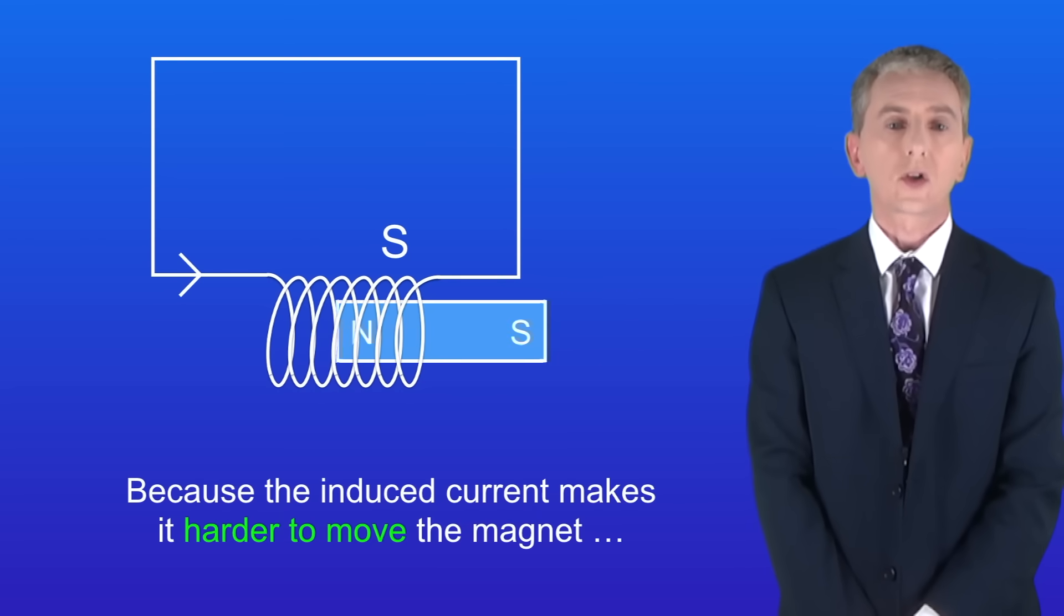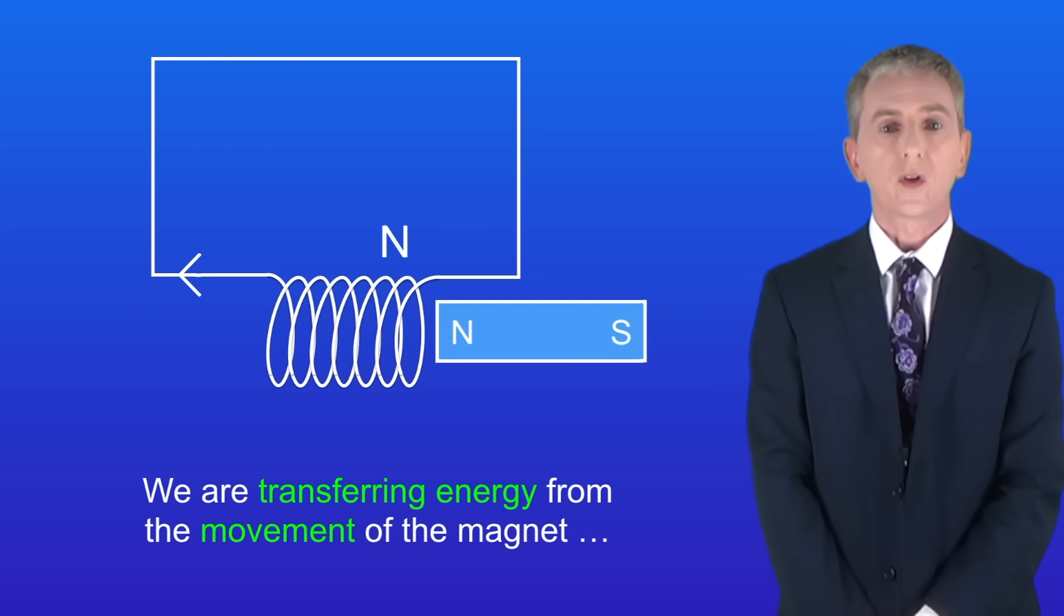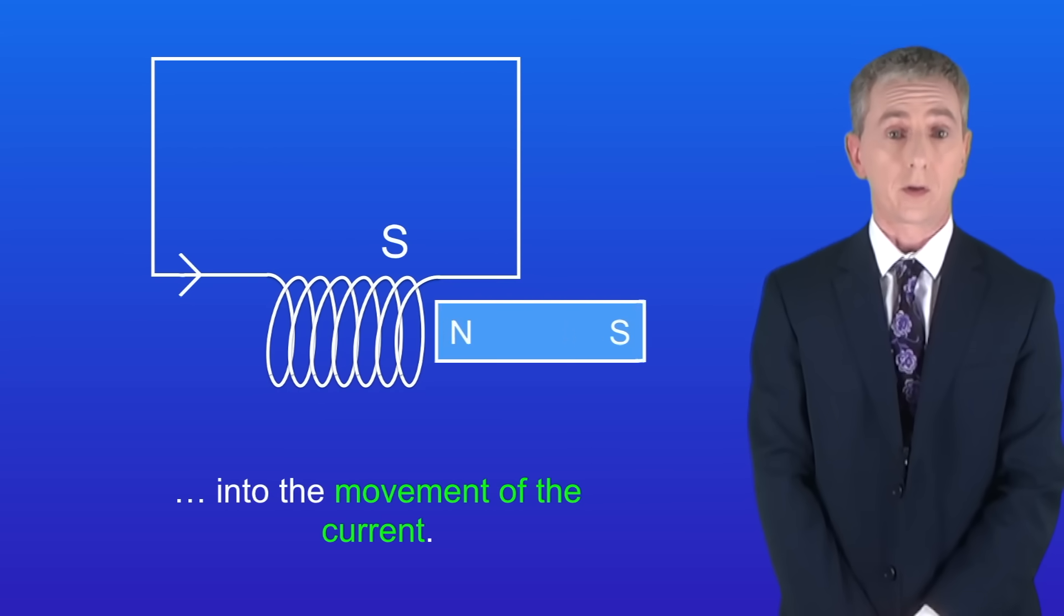So because the induced current makes it harder to move the magnet, this means that we're doing work. In other words, we're transferring energy from the movement of the magnet into the movement of the current. Remember you'll find plenty of questions on the generator effect in my revision workbook, and you can get at that by clicking on the link above.